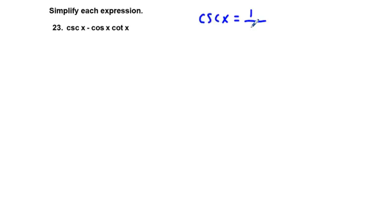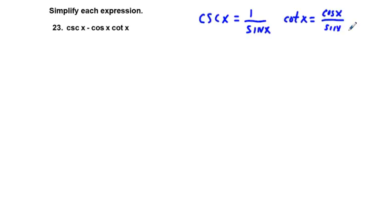We have cosecant x minus cosine x cotangent x. What we're going to try to do is change everything in this expression in terms of sine and cosine. Specifically, cosecant x is equal to 1 over sine x. And cotangent x is equal to cosine x over sine x. So let's go ahead and rewrite this expression based on these changes.